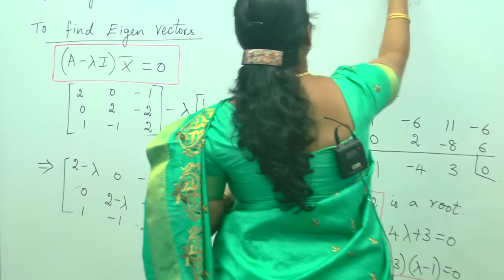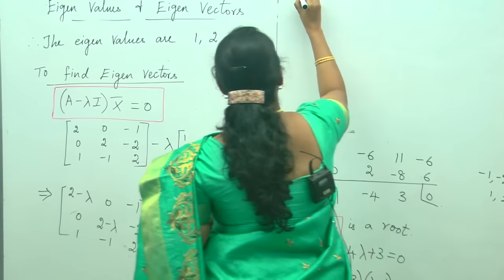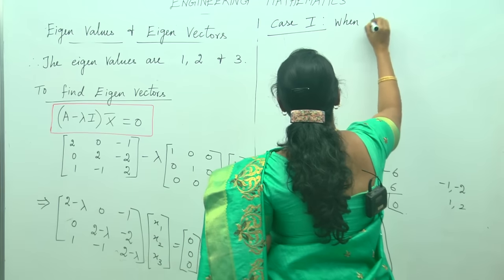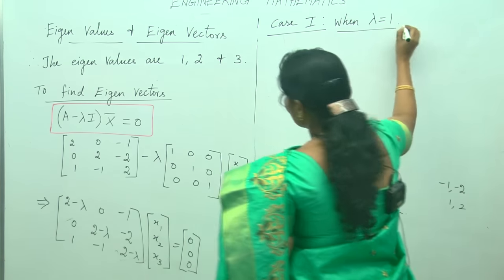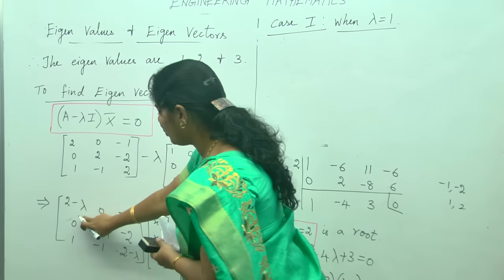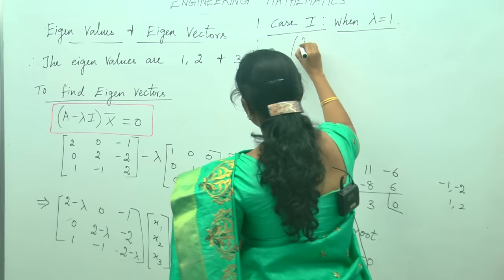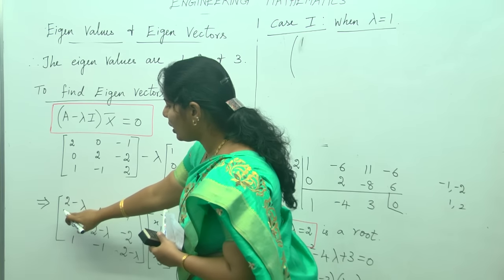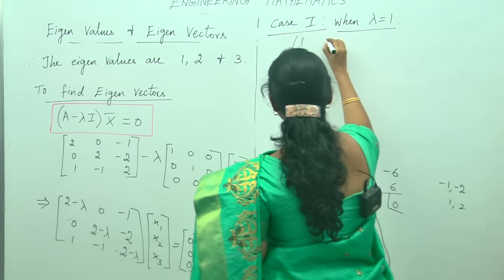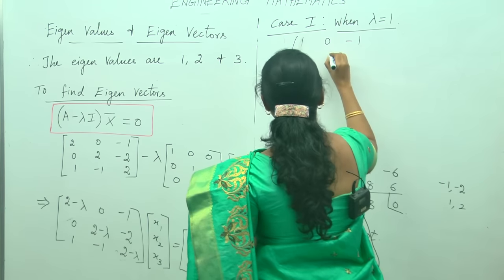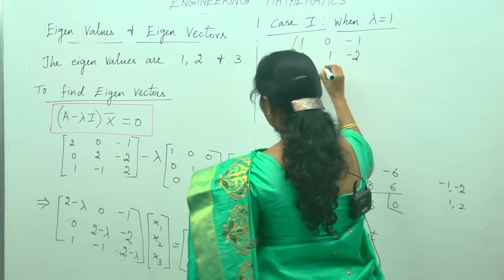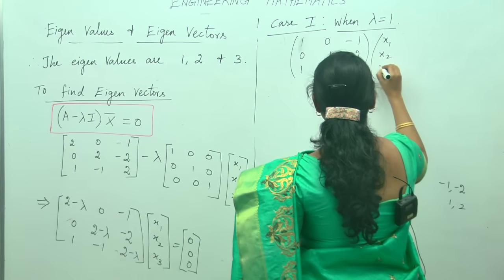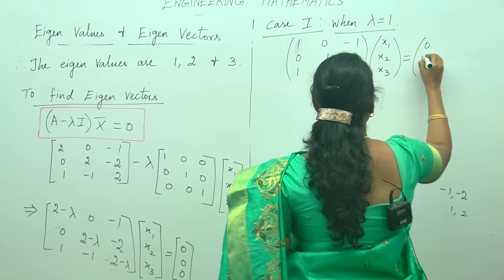Case 1: when lambda equals 1. We substitute this lambda value into the matrix. So 2 minus 1 gives 1. The reduced matrix becomes [1, 0, −1 / 0, 1, −2 / 1, −1, 1], and x-bar is [x1, x2, x3] which equals [0, 0, 0].